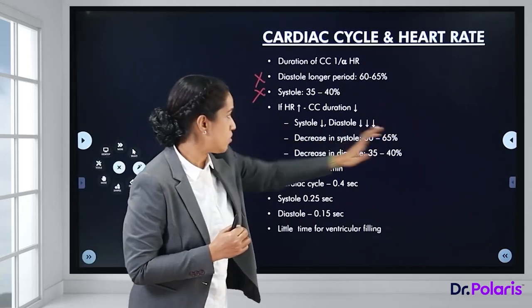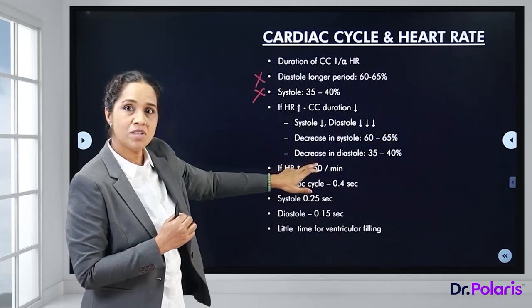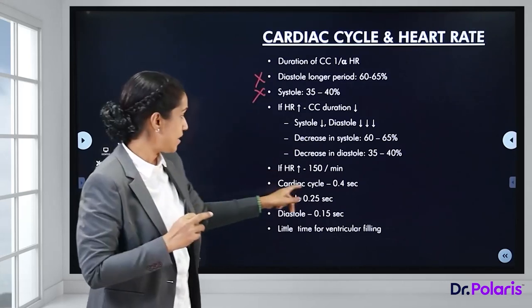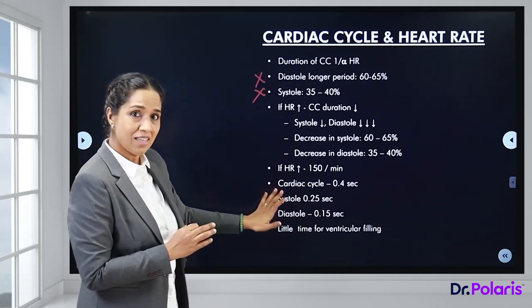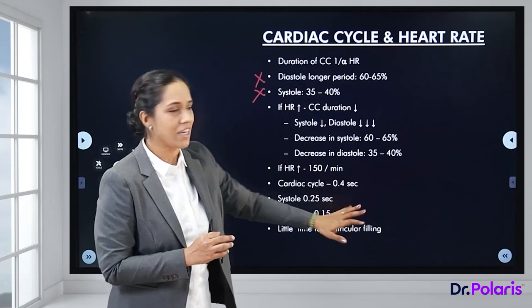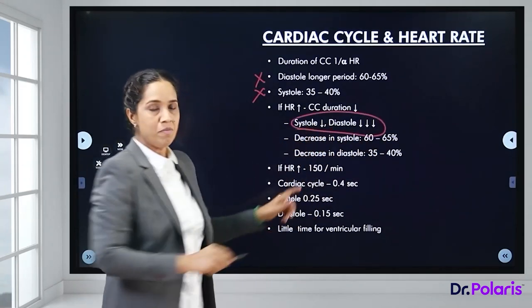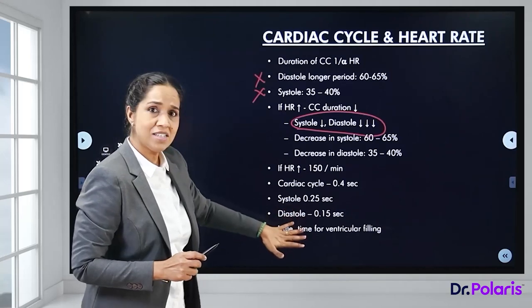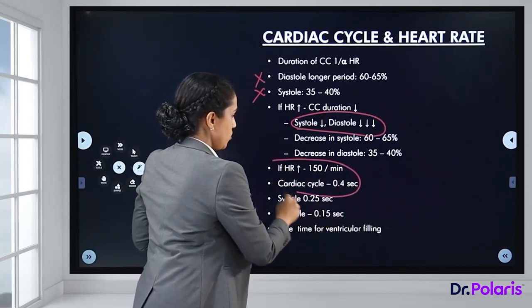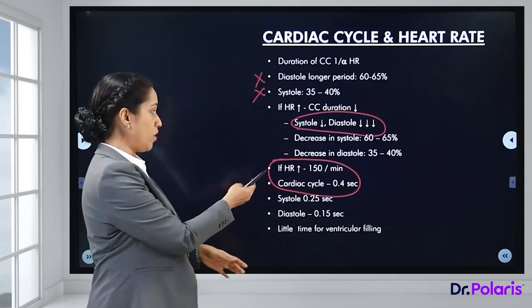For example, if heart rate increases to approximately 150 beats per minute, the cardiac cycle duration drops from 0.8 seconds to 0.4 seconds. In this scenario, systole takes 0.25 seconds and diastole only 0.15 seconds — meaning diastole now contributes less time relative to systole.